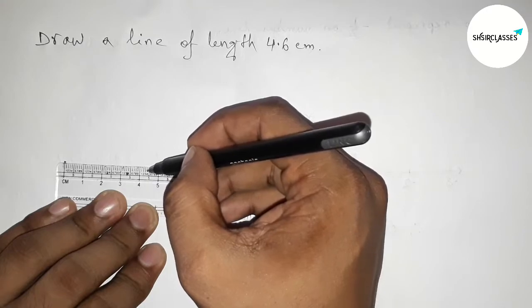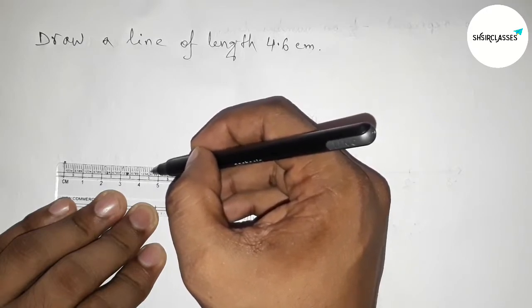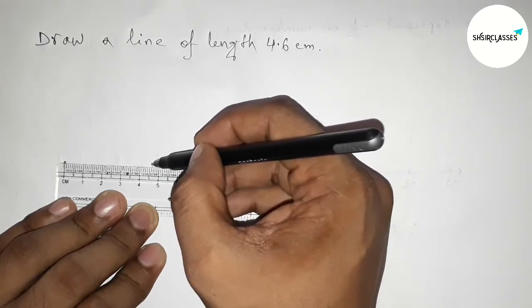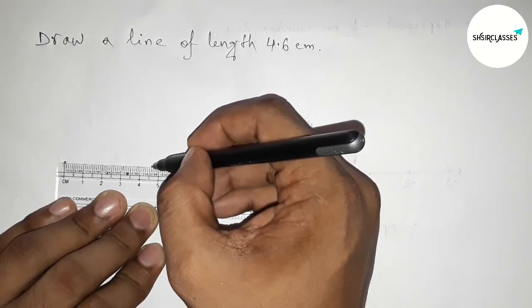Four point one, two, three, four, five - this is four point six. This is four point six centimeter, and marking this.